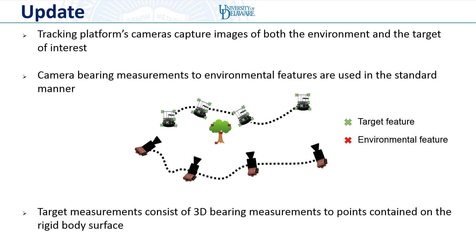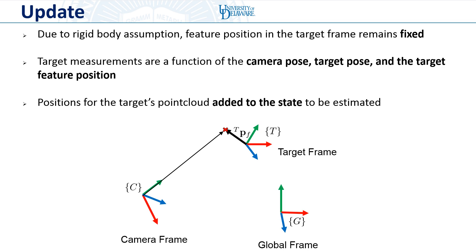In order to formulate the EKF update, we need to know what kind of information the camera provides. As the camera collects images, we can track the motion of 2D projections on the image plane, which correspond to 3D points in a scene. Some of these points correspond to the static environment and can be processed in the standard VIO manner. However, we now have a new set of measurements corresponding to features that are moving because they lie on the target's body. If we assume the target is a rigid body, all features expressed in the local target frame remain fixed. As such, all target measurements can be expressed as a function of the moving camera and target poses, as well as the static target feature position. Because we don't know the target's point cloud a priori, we add these positions as additional variables to be estimated in our state, and therefore we can perform the EKF update.